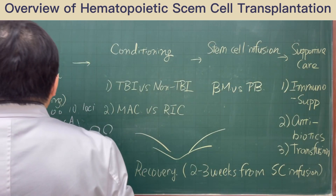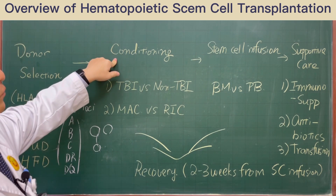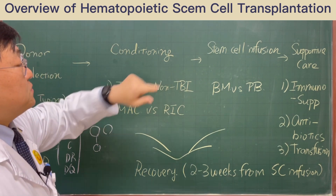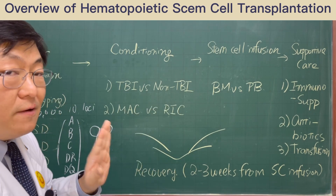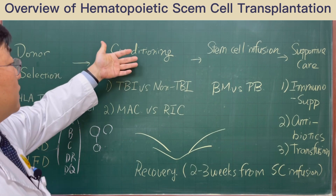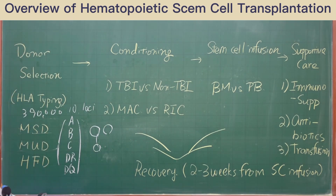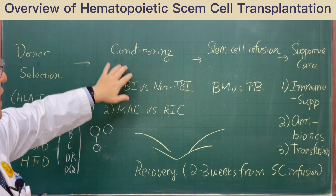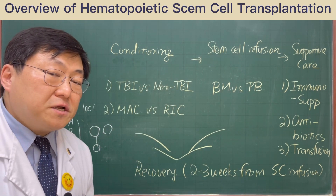After selecting the appropriate donor, the patient is usually admitted to the laminar flow room and undergoes bone marrow biopsy and some evaluation. The patient will then receive the conditioning regimen — a series of drugs or radiation to suppress the patient's normal marrow function and immunologic function.